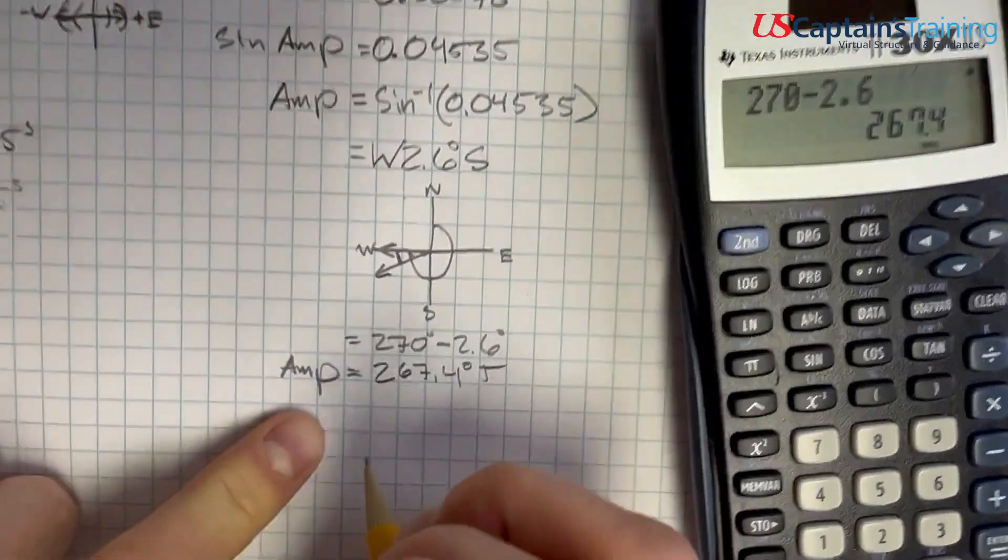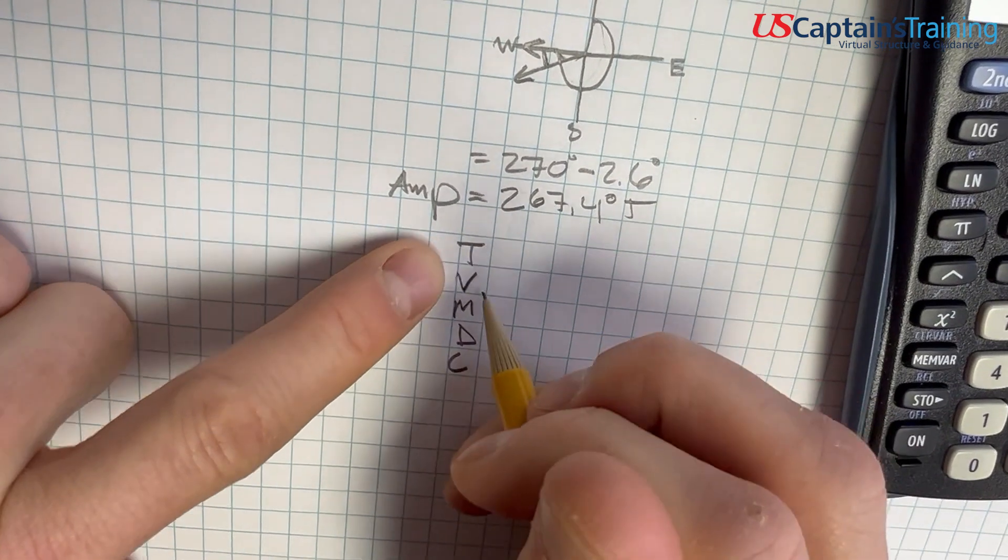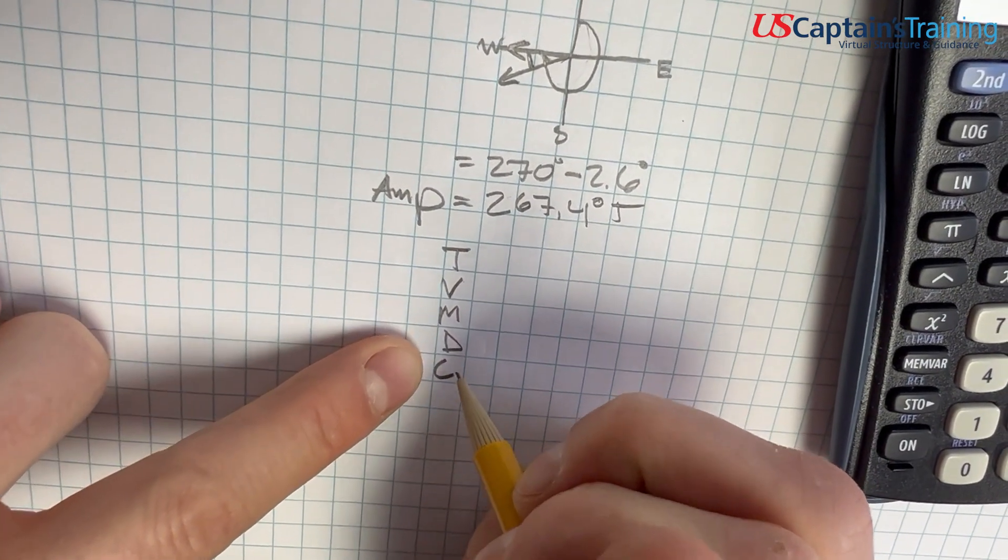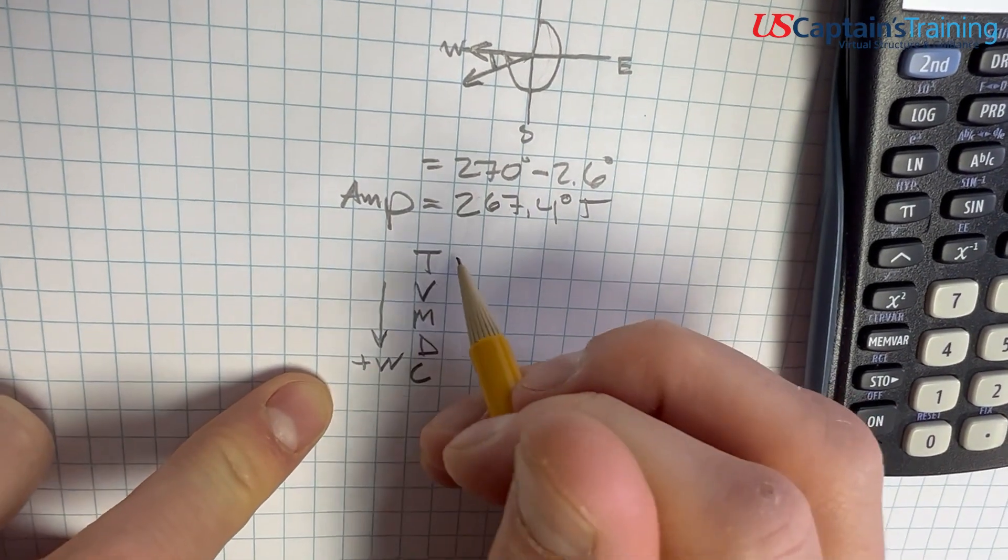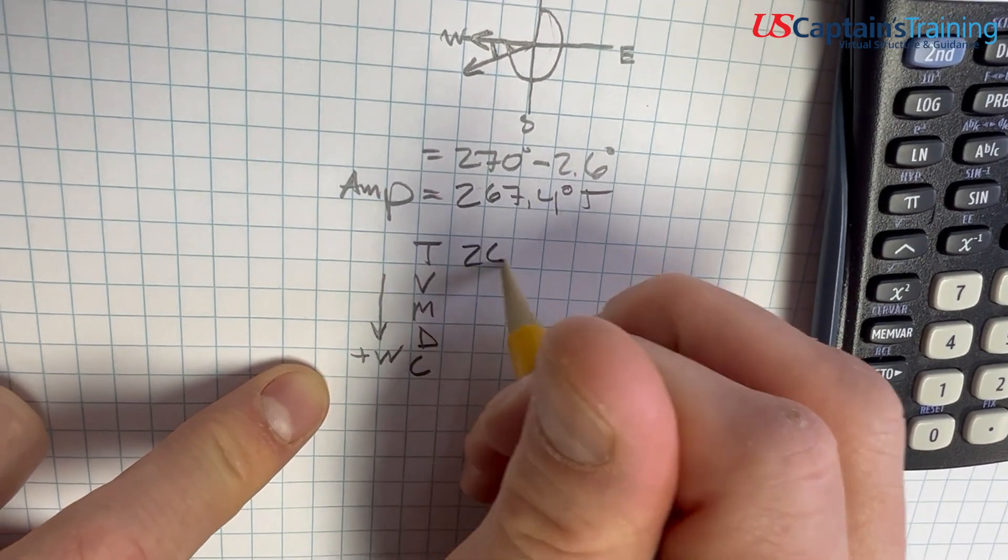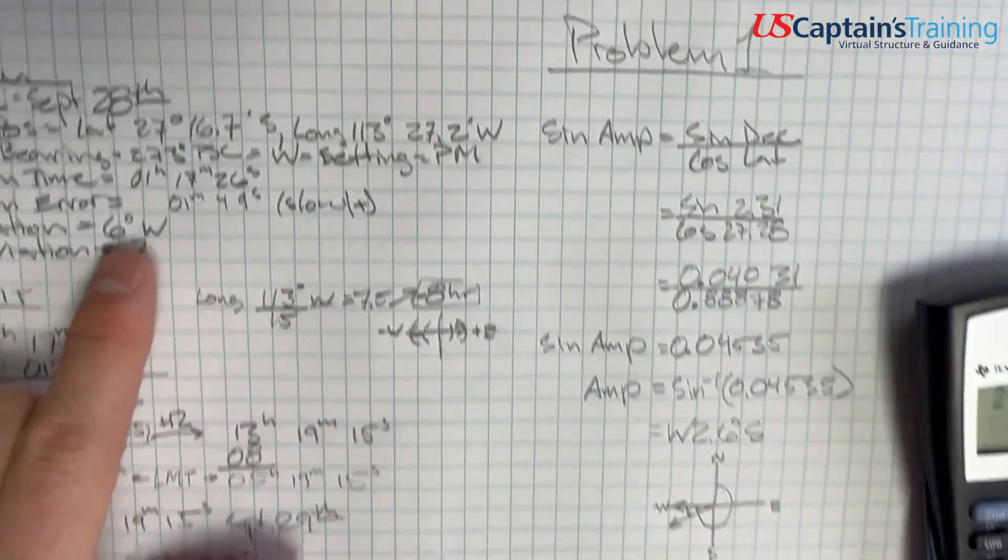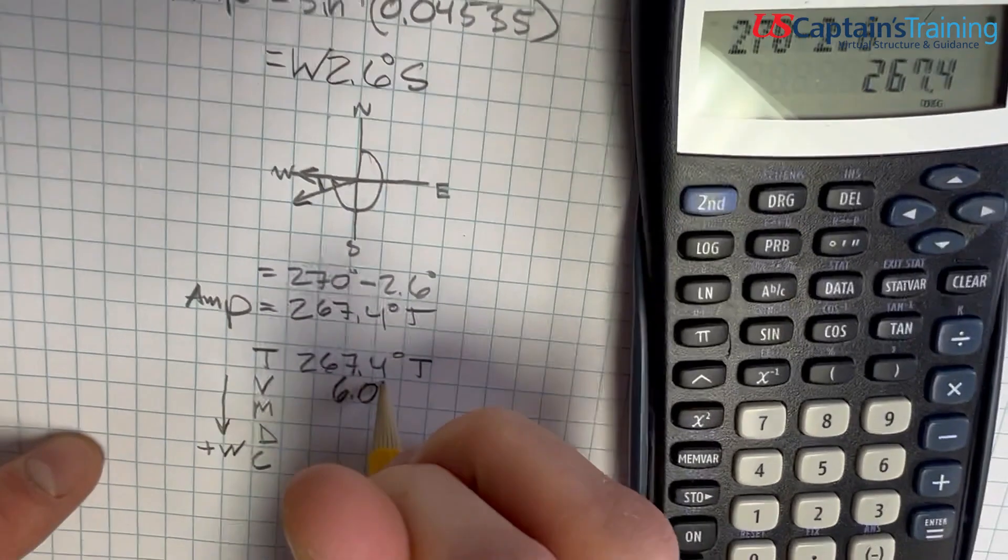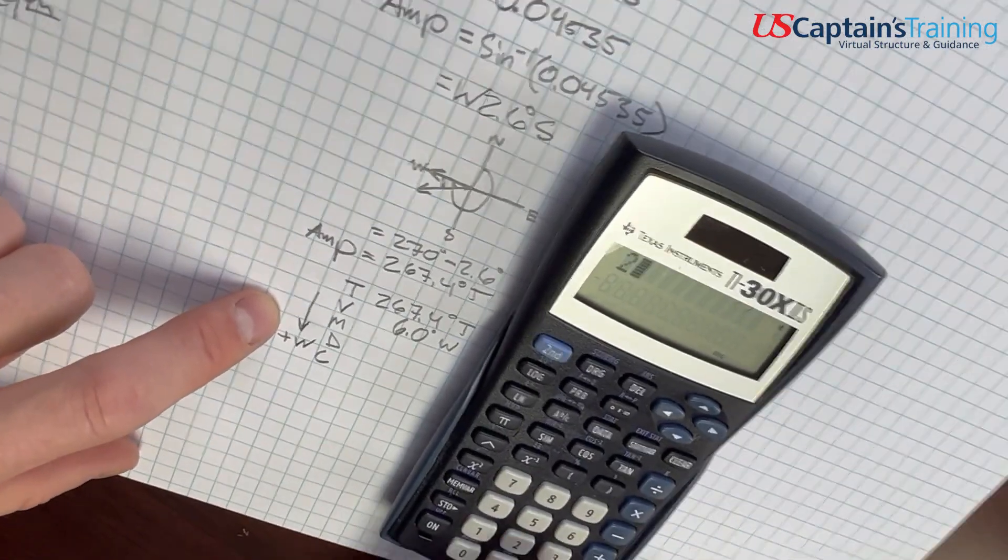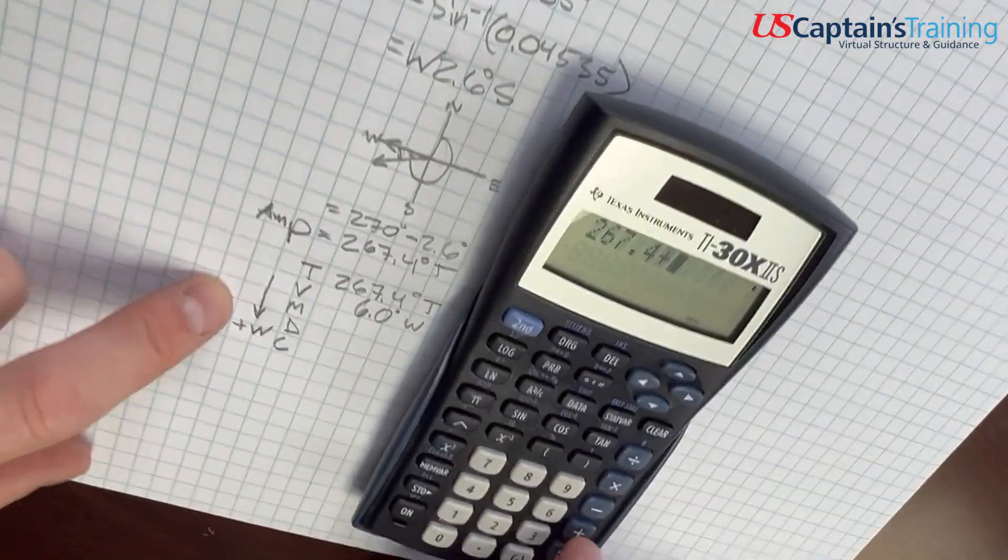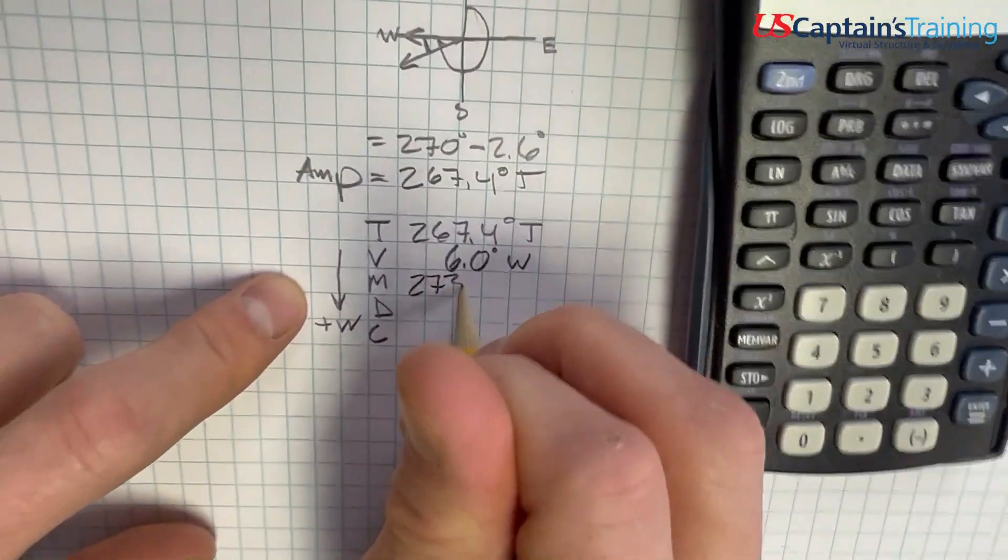Now we'll correct our compass: T, V, M, D, C - true, variation, magnetic, deviation, compass. When we go down, we add west. True is 267.4°. Variation was given as 6° west. When we're going down, we add west. So 267.4 plus 6 equals 273.4°.